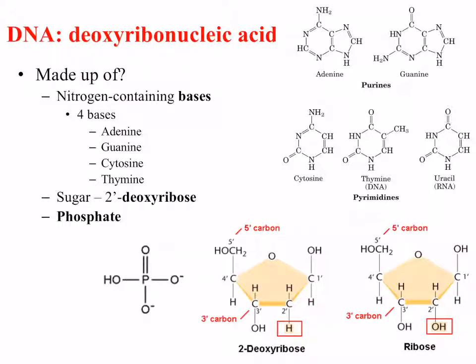These nitrogen-containing bases are shown on the diagram on the right. You can see that the purines — which adenine and guanine are known as — consist of two ring structures, and there is a nitrogen present in a number of different locations on the structure. The pyrimidines are the other nitrogen-containing bases and contain a single ring structure: cytosine and thymine for DNA, and uracil, which replaces thymine in RNA, which we'll talk about in the next lecture.